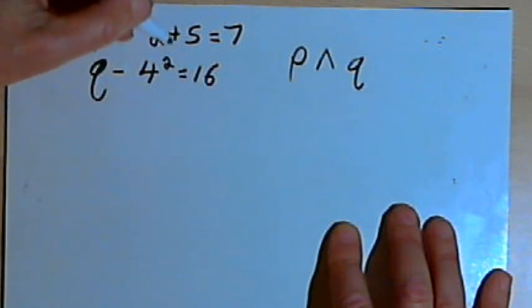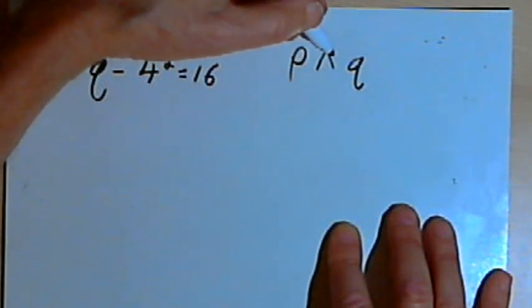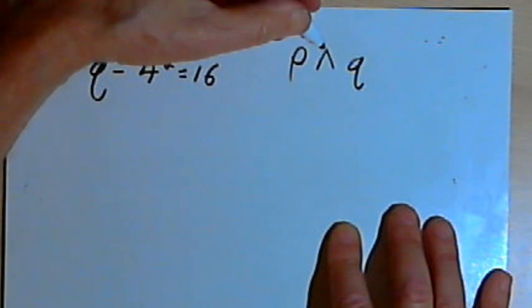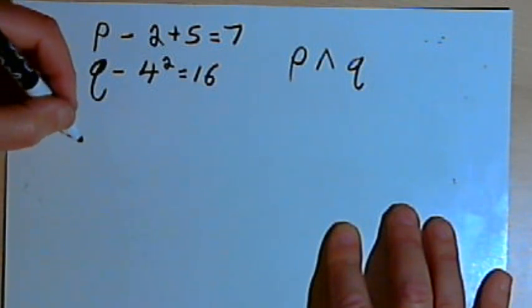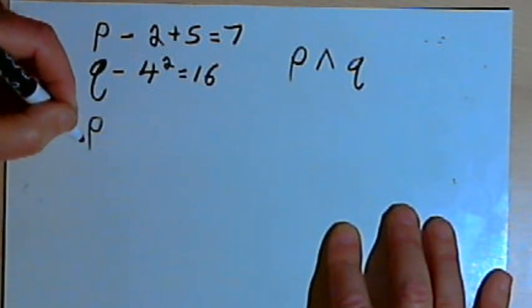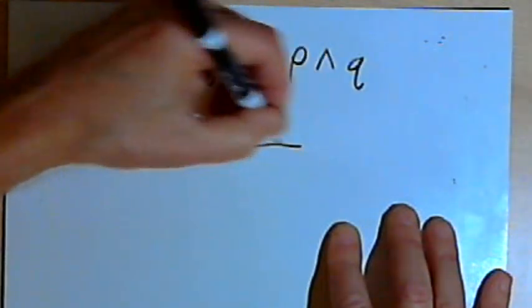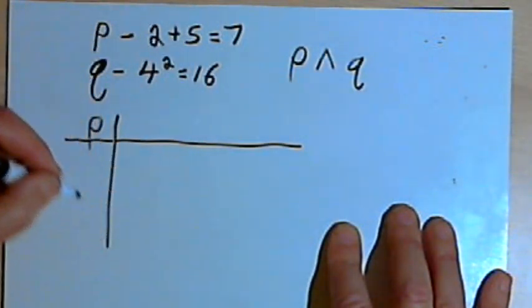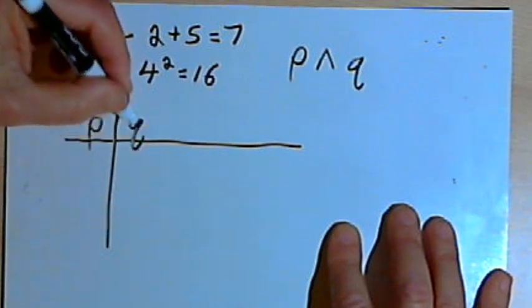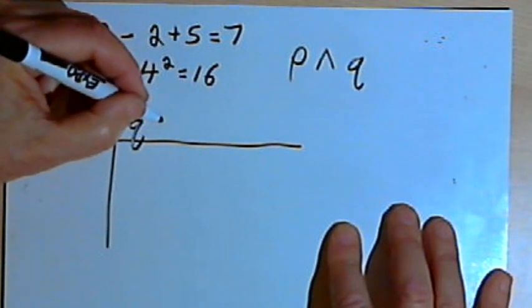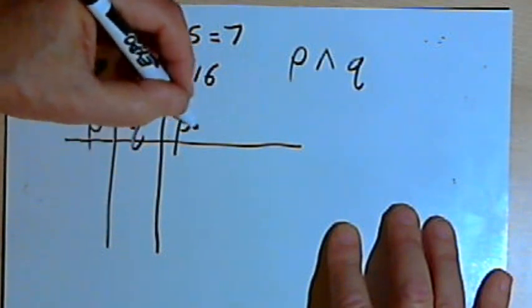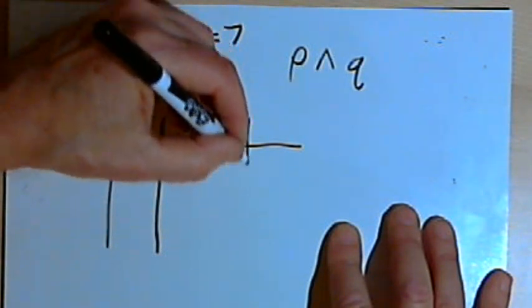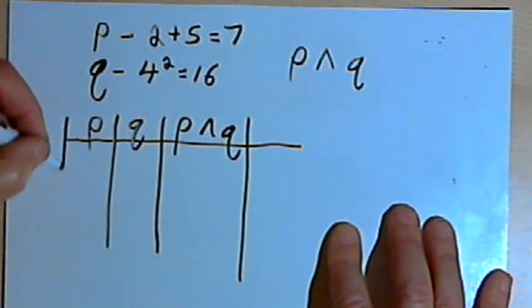I'm combining those two statements together. For this conjunction to be true, both P and Q have to be true. I can make a truth table to show this. I'll make a table with a first column for P, another column for Q, and a third column for the conjunction P and Q.